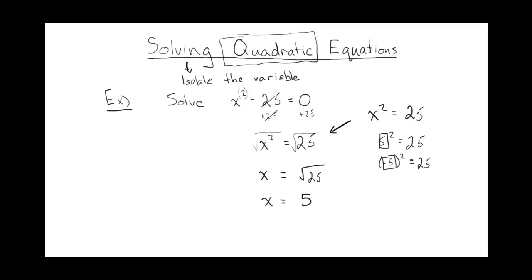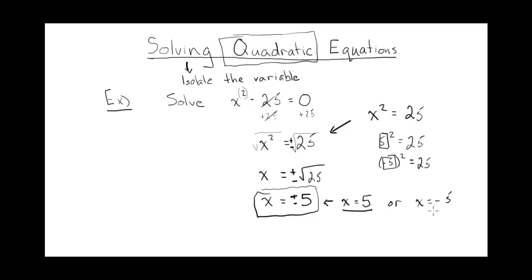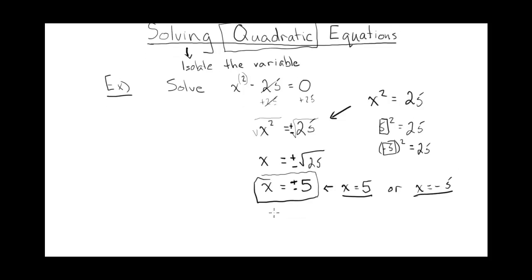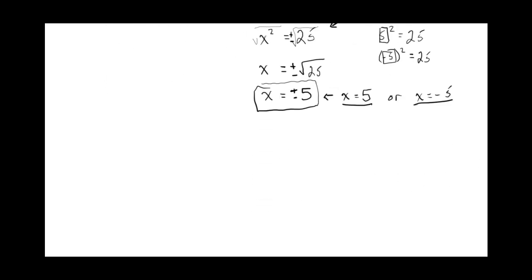So when you solve an equation like this and you take the square root of both sides, you have to do the positive and the negative in order to get both answers. So x is actually equal to two things. x is equal to plus or minus 5. What this means is x equals 5 or x equals minus 5 — both answers work. You can just check: if you put 5 into this equation, you would get 0. It's interesting to note that when you solve a quadratic equation, you can get two answers.